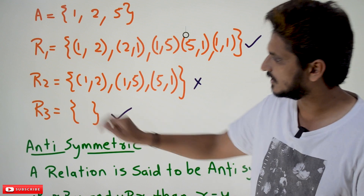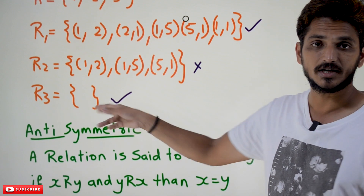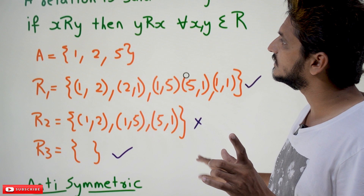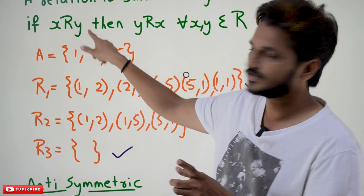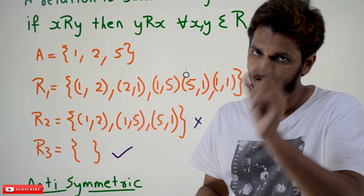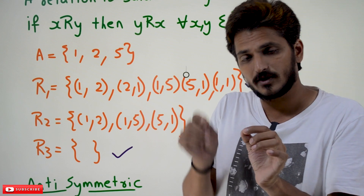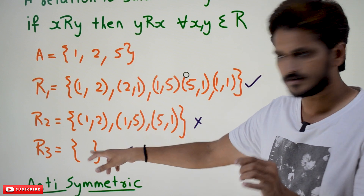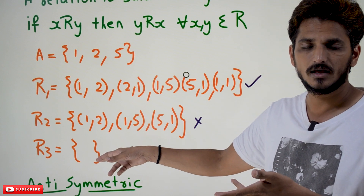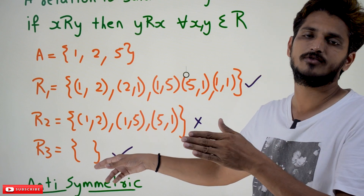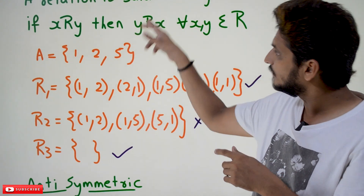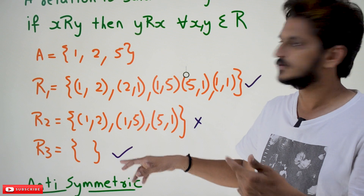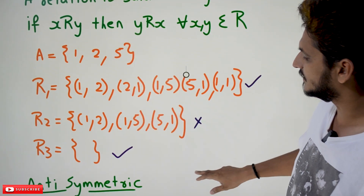Next example: R3 = empty set. Is it a symmetric relation? Yes, it is a symmetric relation. Because our statement says if x relates y — if you find a pair — then only you have to check for y relating to x. There are no such pairs here in the empty set. If there is an ordered pair, then only you check for that. So these are some examples of symmetric and not symmetric relations.